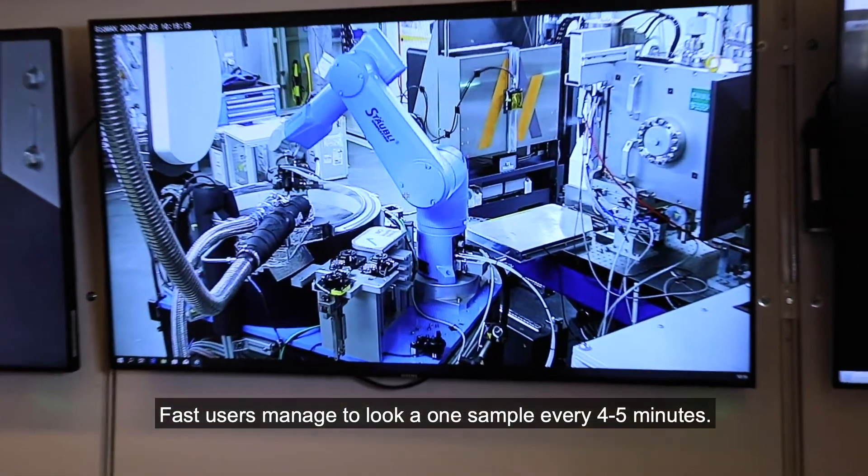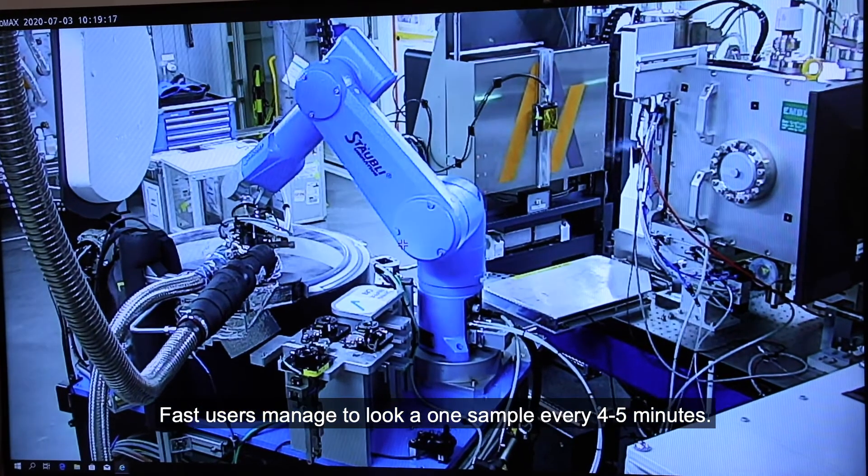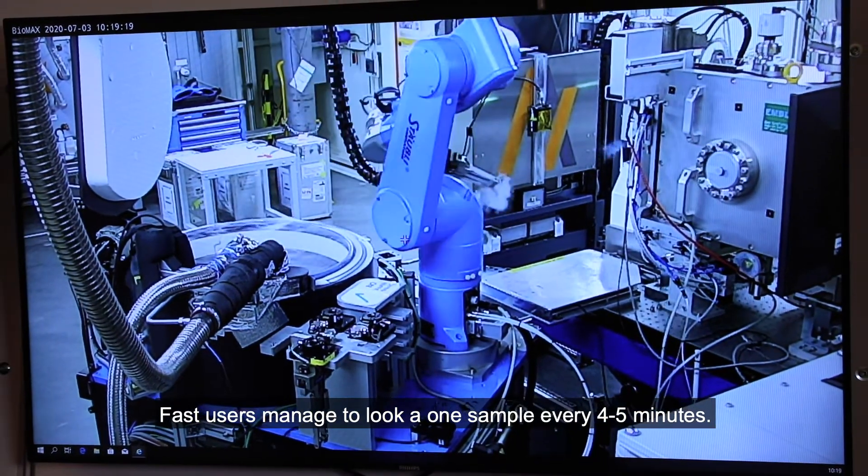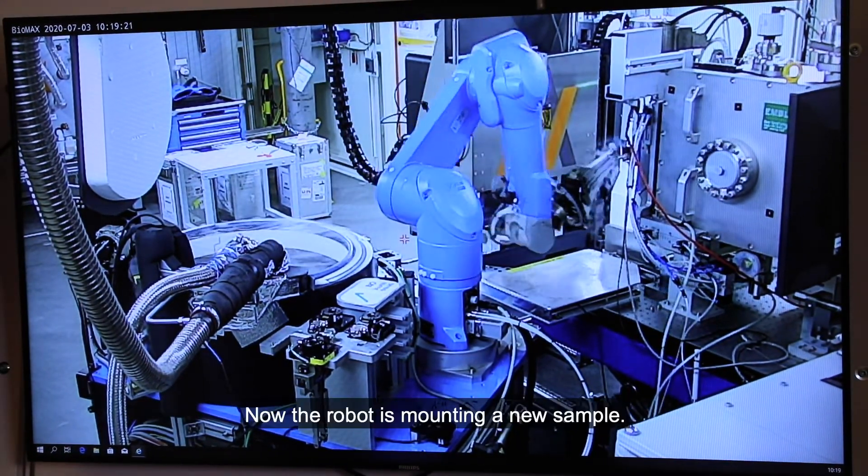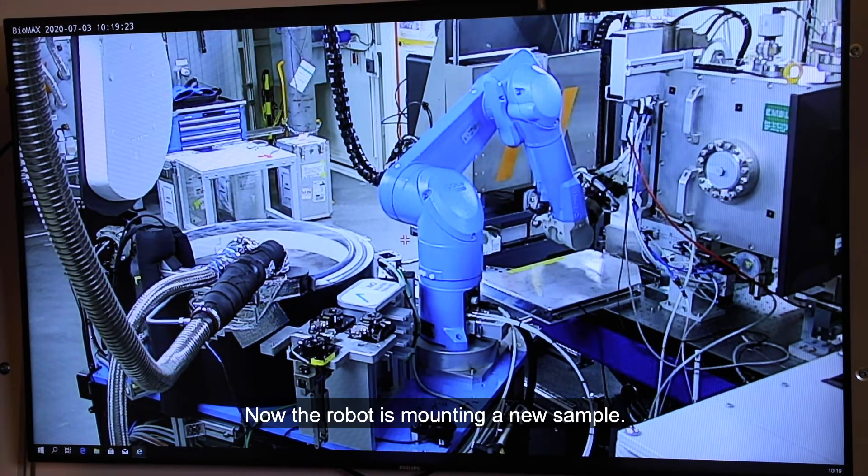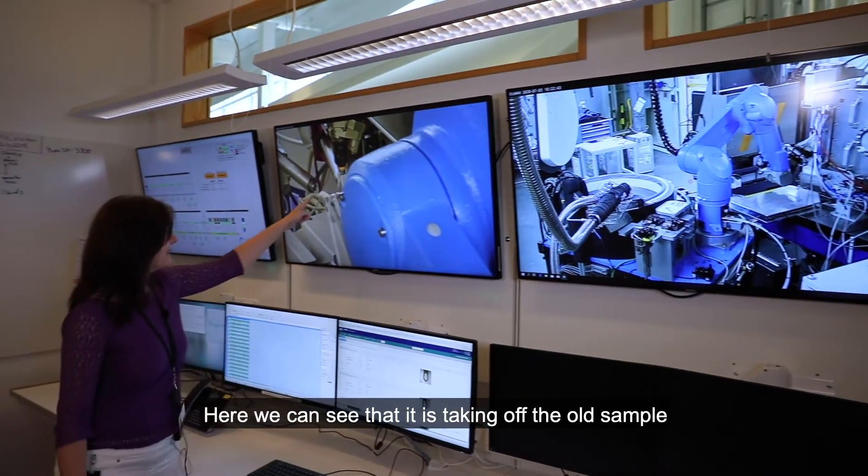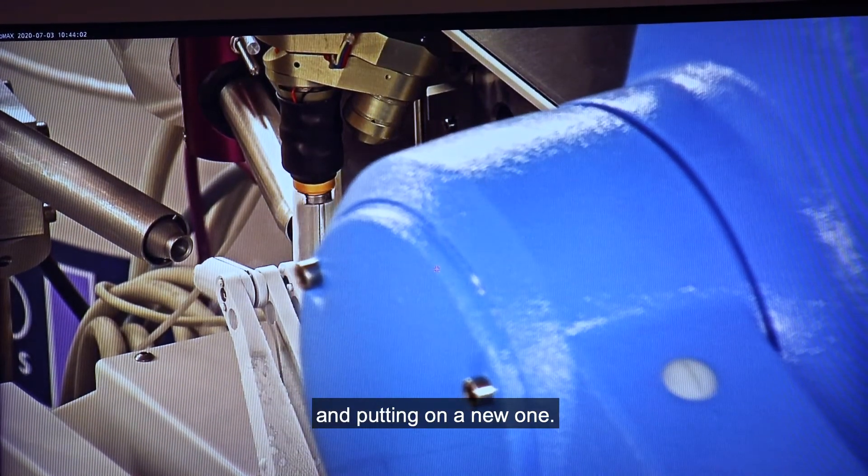Fast users actually manage to look at one sample every four or five minutes. Now the robot is mounting another sample. So here we can see that it's taking off the sample that was mounted before and putting on a new one.